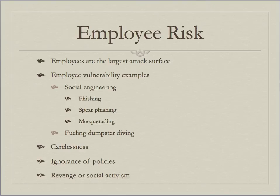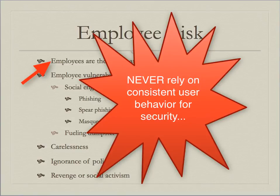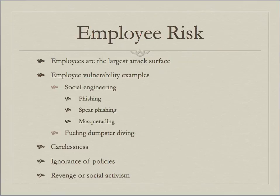Now we're going to talk about employee risk, which leads into training and awareness. Employees are the largest attack surface. Our attack surfaces are normally managed by configuring controls and devices, which once configured act in a consistent manner — but people don't always act in the way we expect, making them our biggest attack surface and our biggest vulnerability. Employee vulnerabilities include social engineering such as phishing and spear phishing, which involve getting employees to do something they ordinarily wouldn't, to the benefit of an attacker — either achieving a final objective or an interim step toward it.